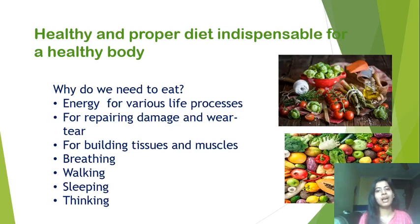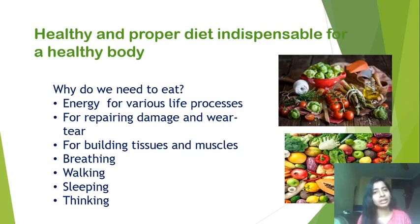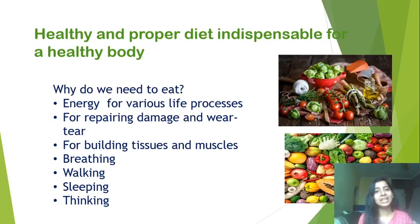For repairing damage and for wear and tear: in our tissues we sometimes have injury, so to repair them we need energy. Cells keep on dying, so we have to produce new cells and build new tissues — for building muscles, for breathing, walking, sleeping, thinking, and for your reproductive organs. Each and every system — whether excretory, respiratory, or reproductive — needs energy, and for that we need food.